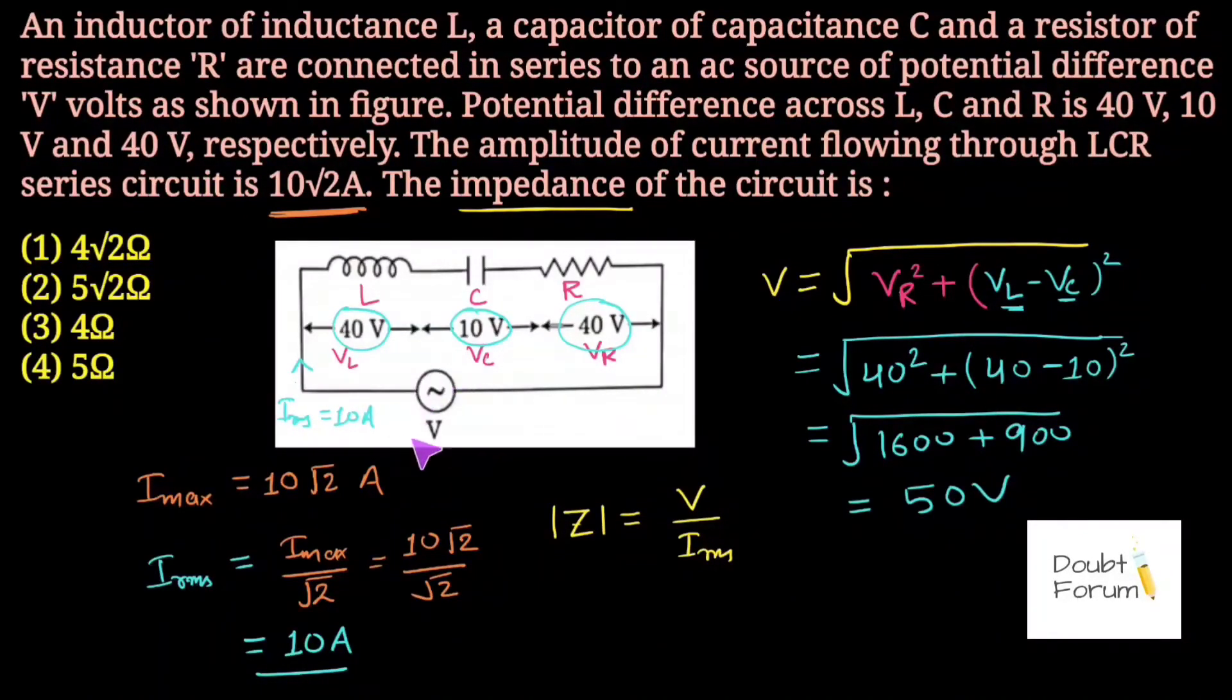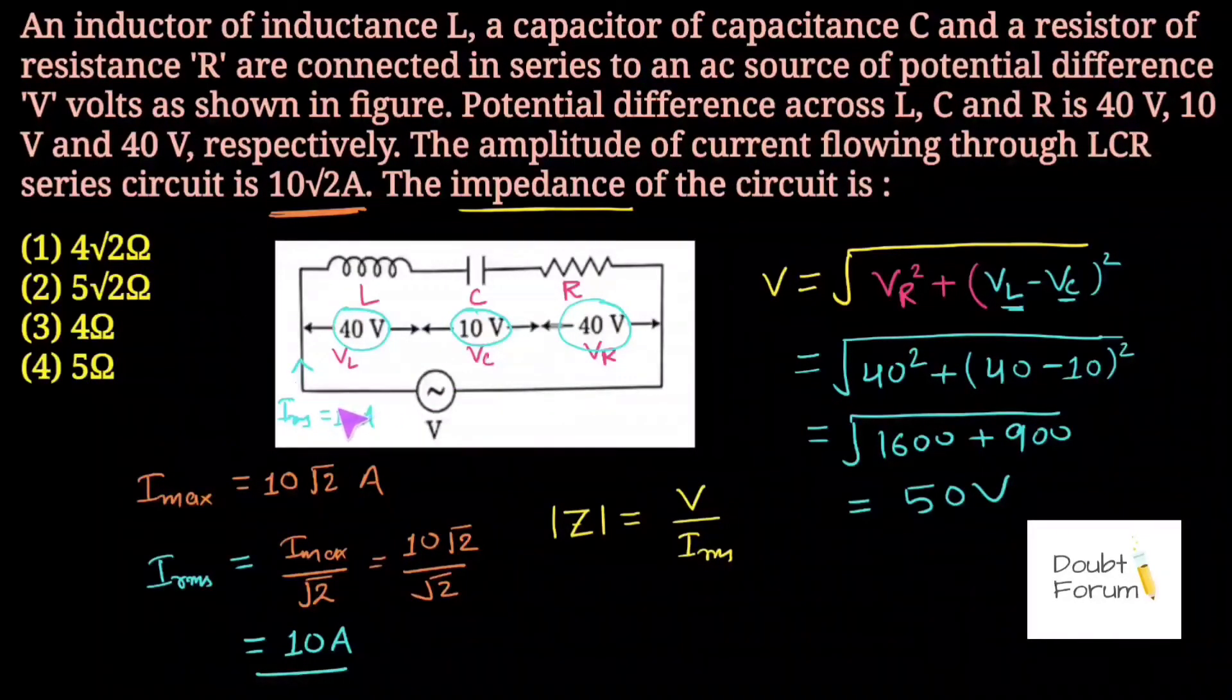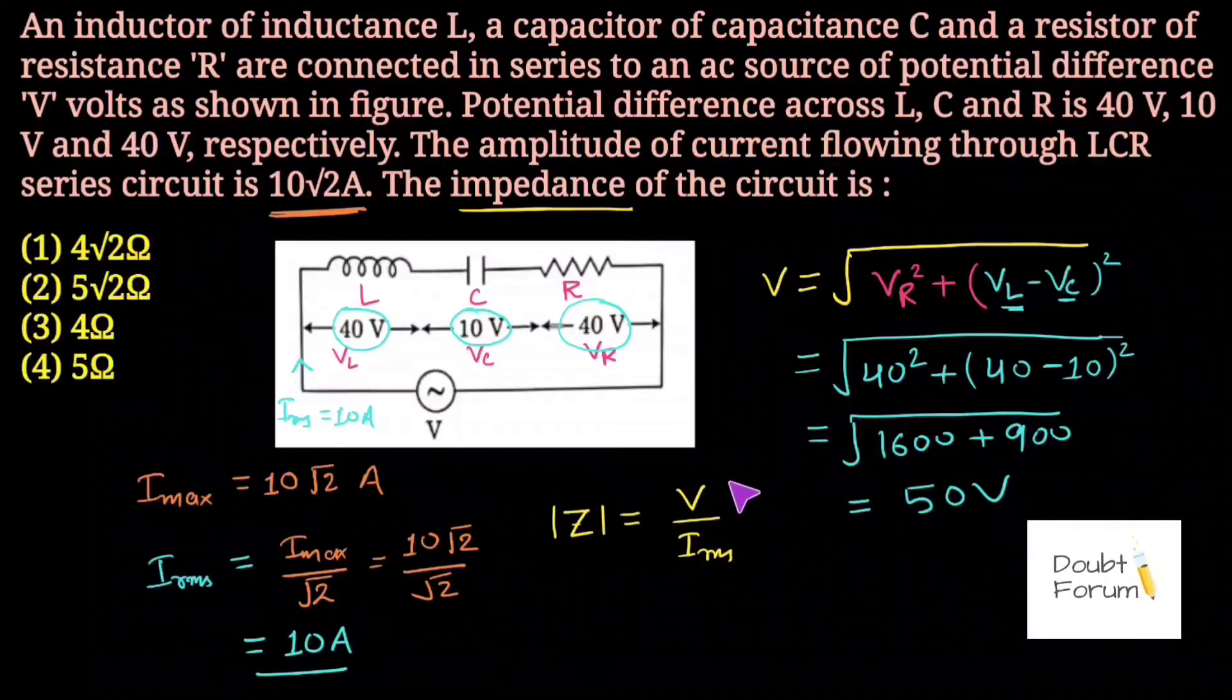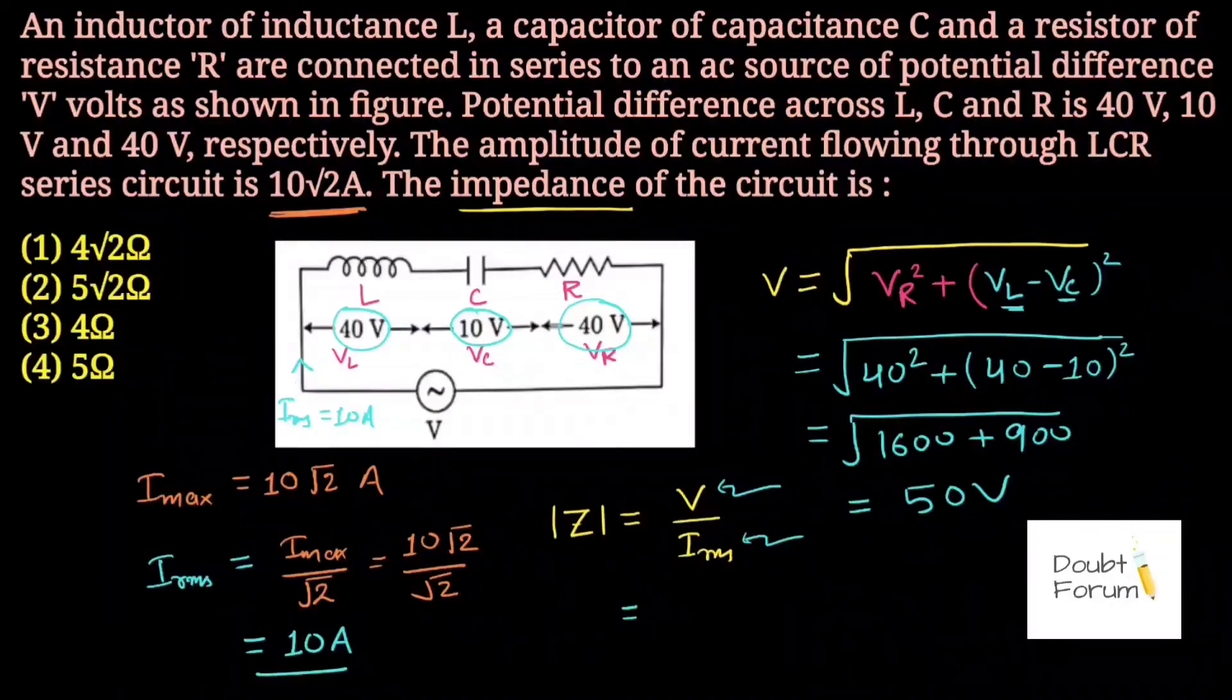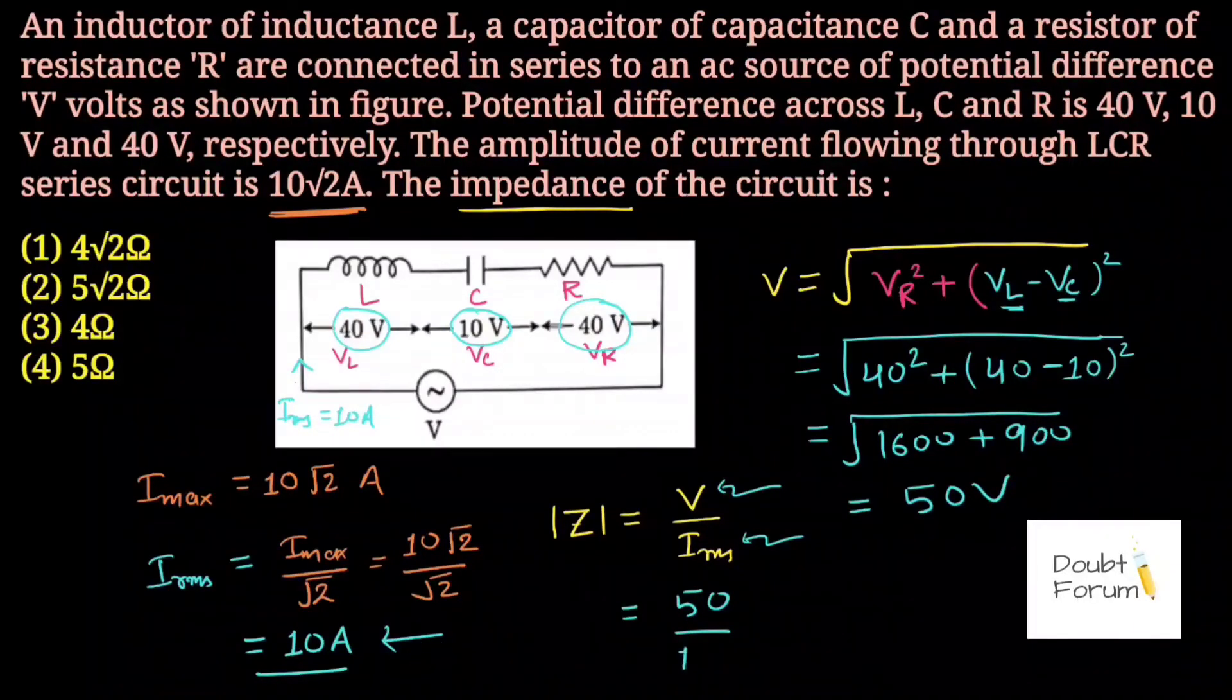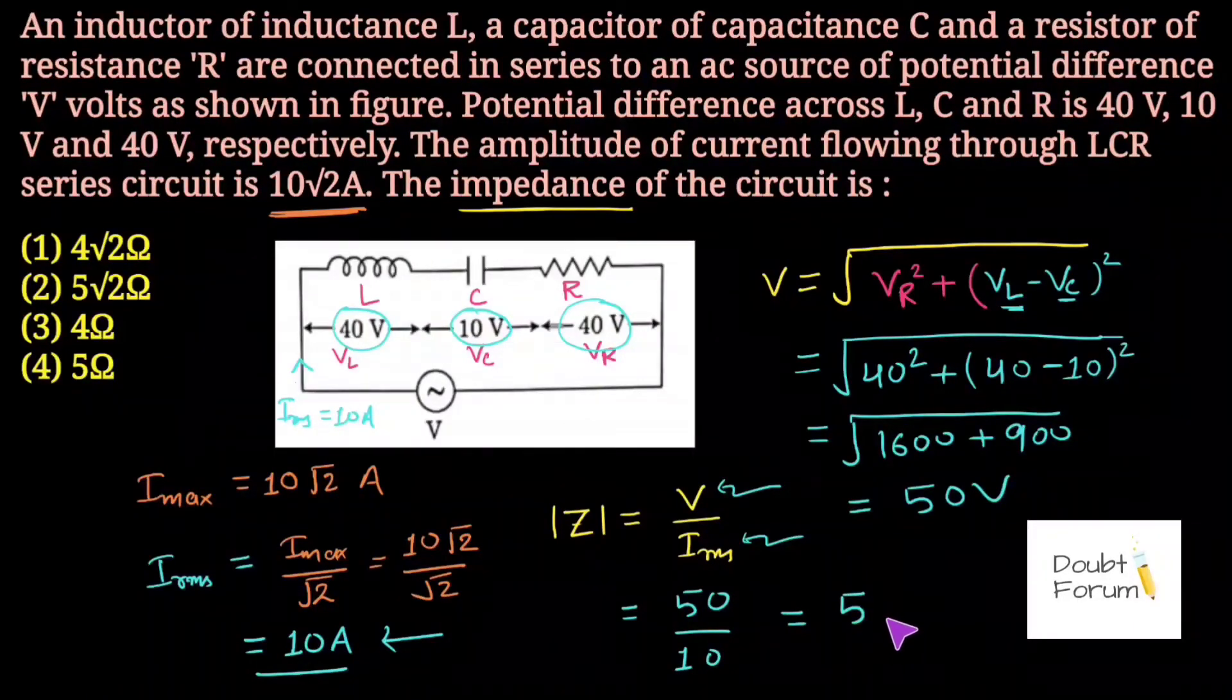This voltage source is of 50 volt magnitude which supplies 10 ampere RMS current in this circuit. Now we put the values of V and IRMS to find the impedance. The voltage is 50 and the RMS current is 10 ampere. The impedance value comes out to be 5 ohm, so 5 ohm is the answer.